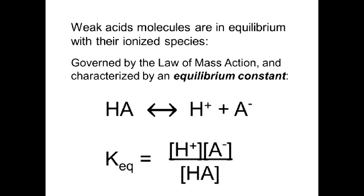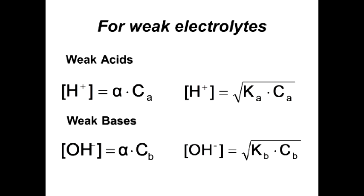Weak electrolytes dissociate only partially, so there is equilibrium between molecules and ions in their solutions. This equilibrium is characterized by the law of mass action and the equilibrium constant. Here are some formulas you can use to calculate hydrogen ion concentration in weak acid solutions and OH⁻ ion concentration in weak base solutions.